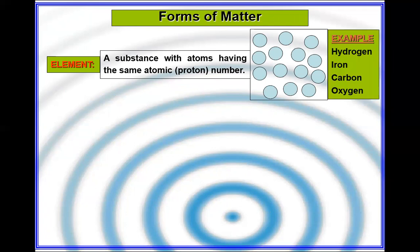We have 118 elements in the periodic table, from hydrogen, to iron, carbon, and oxygen.